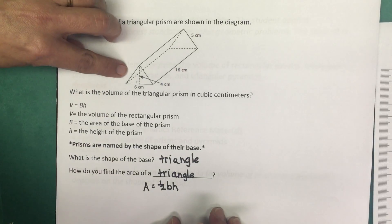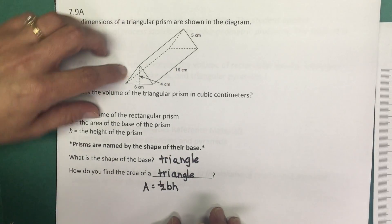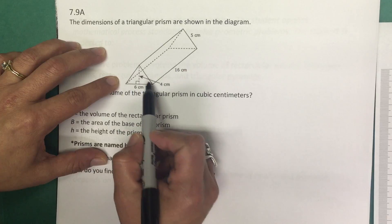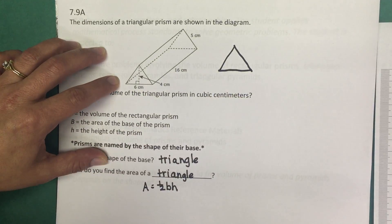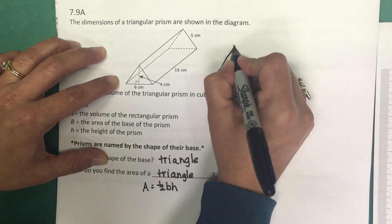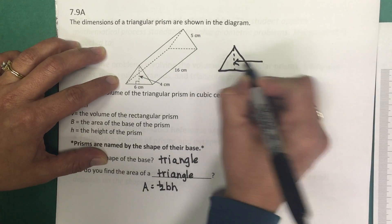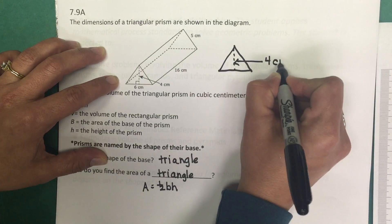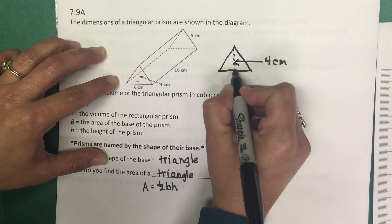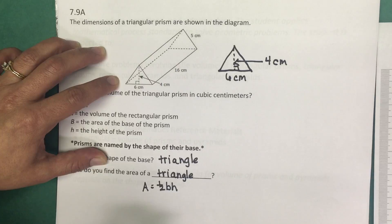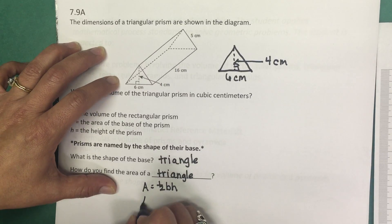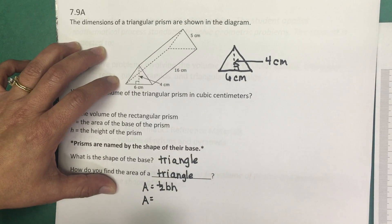So let's look at the diagram that we're provided. And you can see they have labels of dimensions for that triangular base. So we have the height measured as four centimeters and the base measured as six centimeters. So we're going to substitute those values into the formula for the area of a triangle.